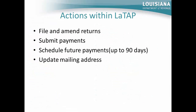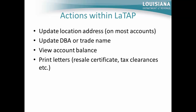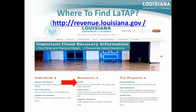There are several actions within the LATAP program. You may file and amend returns, submit payments, schedule future payments for up to 90 days, and update the mailing address. Additional actions include updating location addresses on most accounts, updating doing business as or trade name information, viewing account balances, and printing letters such as the resale certificate, tax clearances, or any other correspondence issued by the department. To locate the LATAP program, access the department's website at www.revenue.louisiana.gov — the first link under the business account information is the link to LATAP, as indicated by the red arrow.